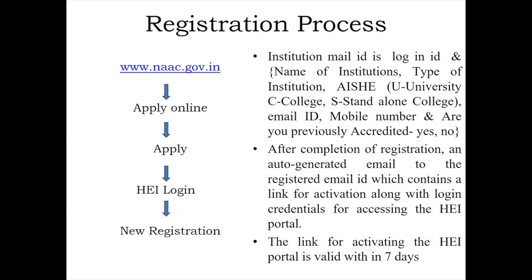Please go to www.naac.gov.in and apply online, then log in and do new registration. Keep in mind while applying, choose your institution and the AISHE code. For colleges it starts with C, for standalone institutions with S, for universities with U, and autonomous colleges with C. Use the official email ID and mobile number of the institution, not any individual person. If you have been accredited, specify yes and give the details. An auto-generated email is sent after registration, which is active for seven days — kindly activate within seven days or the link will expire.